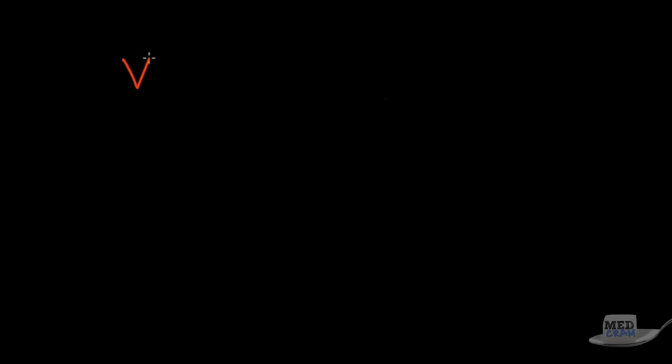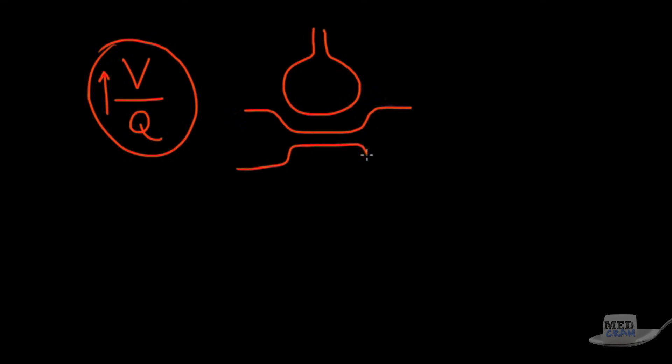Let's get back to what a VQ ratio is. So if we have an area of high VQ, here is our alveolus and here's our capillary, pulmonary artery to pulmonary vein. What this means is that there's quite a lot of ventilation occurring but there's not a lot of perfusion. This type of situation is going to cause generally speaking a high oxygen situation.